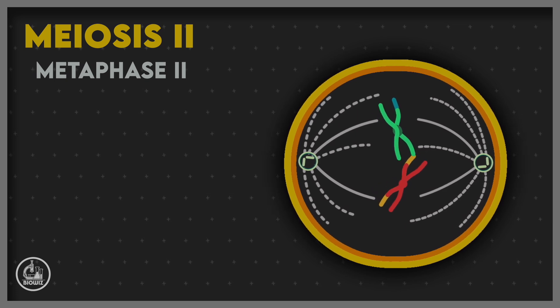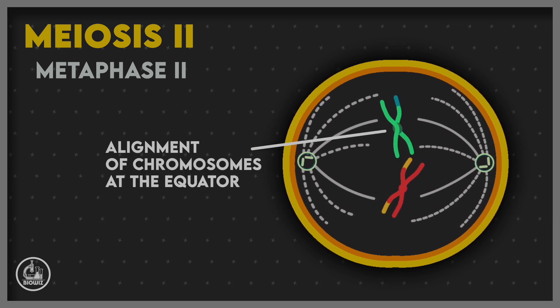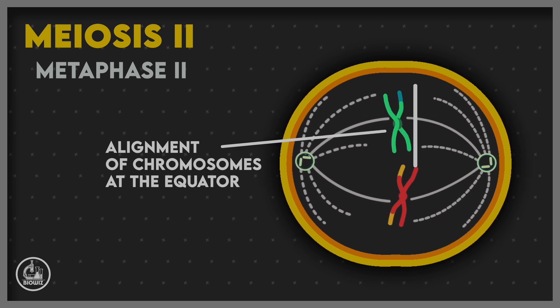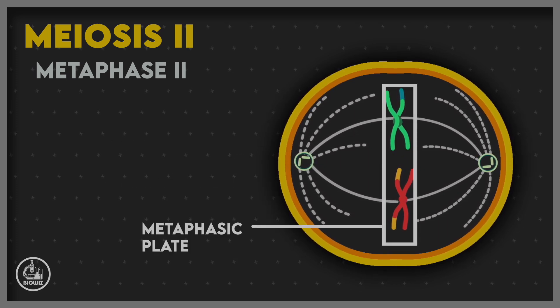In metaphase II, all the chromosomes are aligned at the equator of the cell in a single layer, and the spindle fibers from each pole attach to each chromosome.